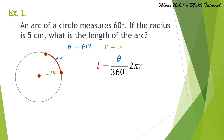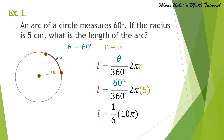Using the formula of arc length, we have theta over 360 degrees times 2 pi R. Substituting theta and R, we have 60 degrees over 360 times 2 pi times 5. So 60 over 360 can be reduced to 1 over 6, and 2 pi times 5 is equal to 10 pi. Multiplying the expression, we get 10 pi over 6, which can be reduced further to 5 pi over 3. So the length of that arc is equal to 5 pi over 3.